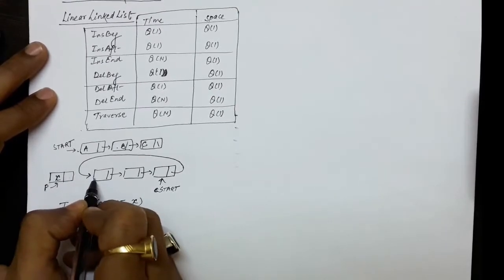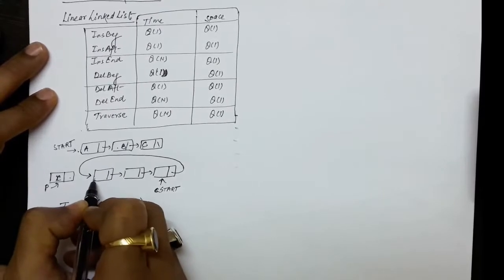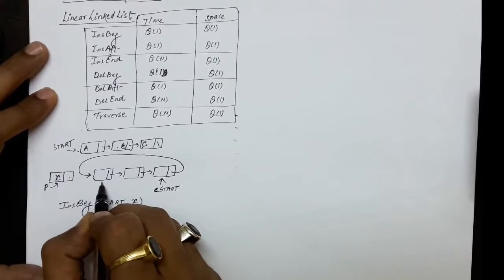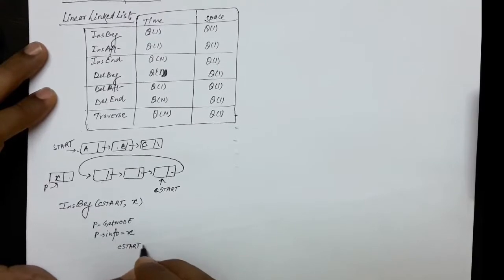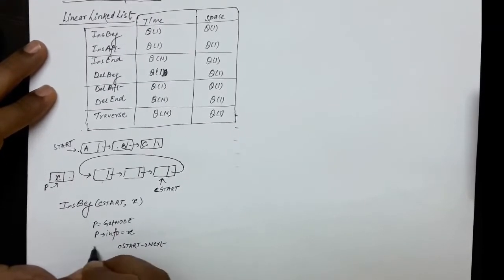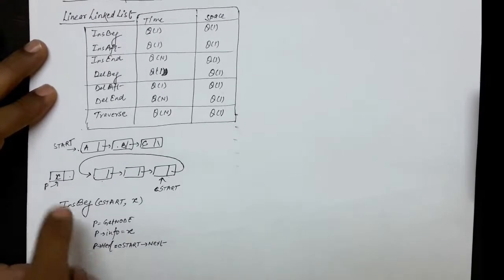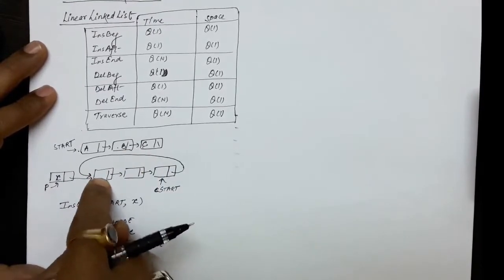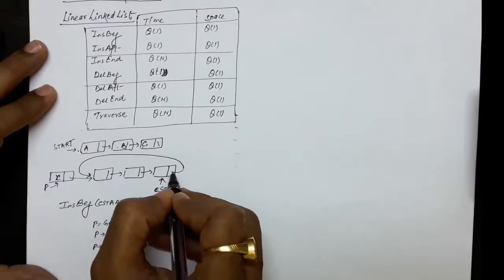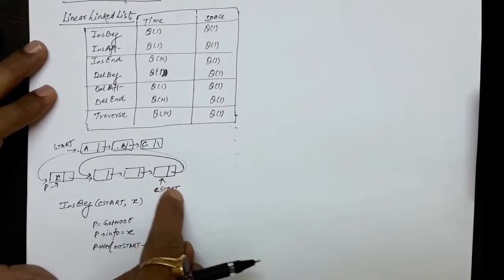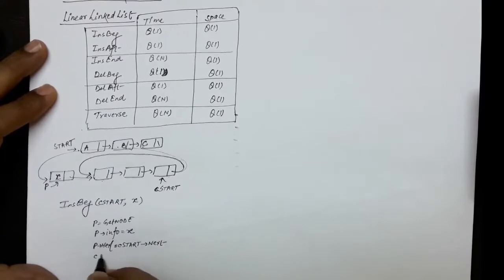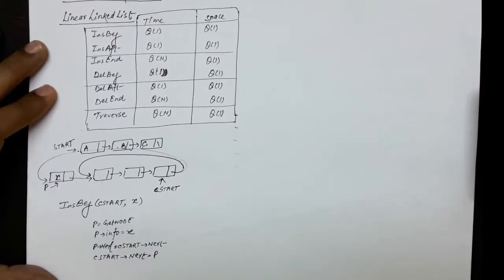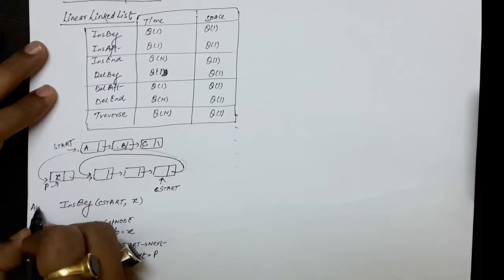Next, we need to link the new node with the existing first node. The address of the earlier first node is C start dot next. So P dot next equals to C start dot next. After this, the next field of the last node should contain the address of the new first node P. So C start dot next equals to P. This is the algorithm for insert beginning.